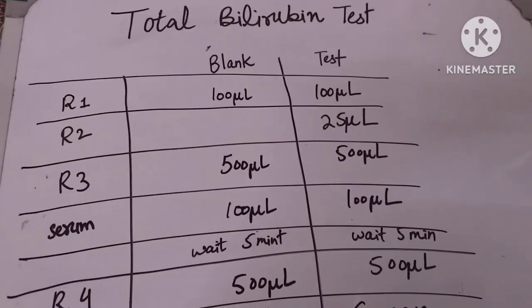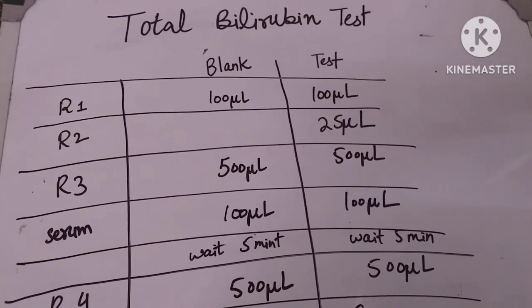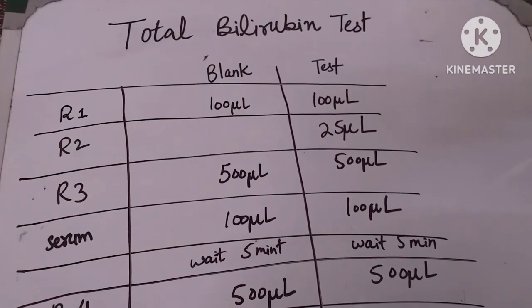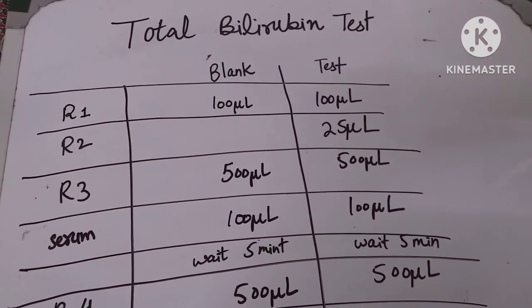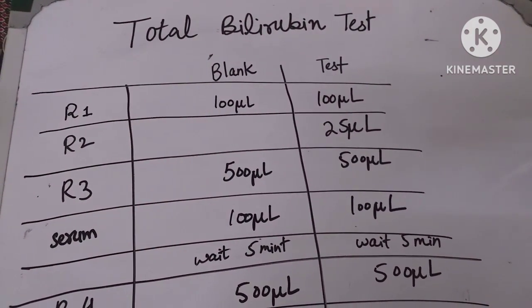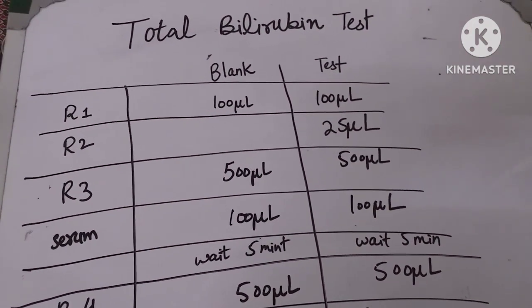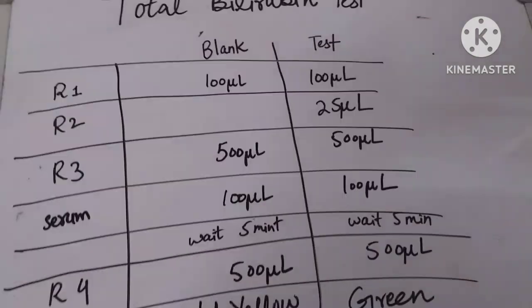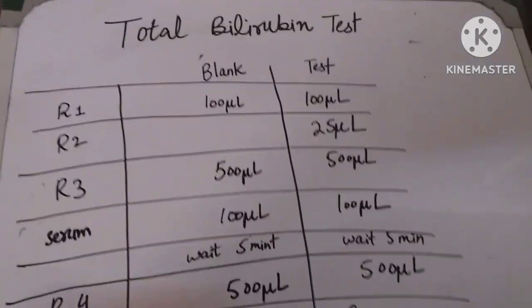In this video, we will learn how the total bilirubin test is run on the Microlab 300. The total bilirubin test has four reagents in total.